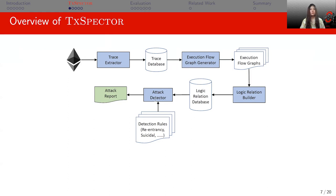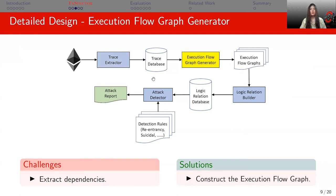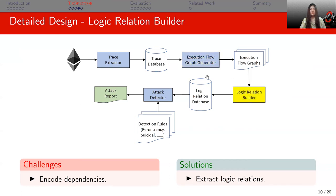There are four components in TS-Bacter. The first two components are the Trace Extractor and the Execution Flow Graph Generator, designed to extract dependencies. The Trace Extractor replays transactions, collects traces, and stores them into a trace database. To express the control flow more explicitly, the Execution Flow Graph Generator builds execution flow graphs and extracts data and code information from the transactions into a graph. The third component, the Logic Relation Builder, encodes dependencies and extracts logic relations, passing graphs into an intermediate representation and then extracting logic relations into a logic relation database.